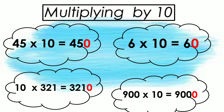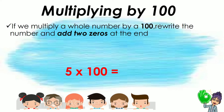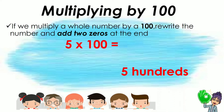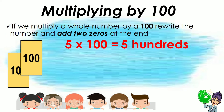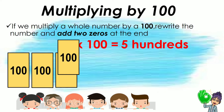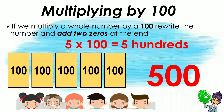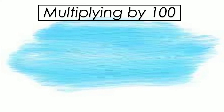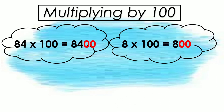Now let's have an example of multiplying numbers by 100. For example, 5 times 100 means we have 5 hundreds, or 5 groups of 100: 100, 200, 300, 400, and 500. So 5 times 100 is equal to 500. In 500, we have 2 zeros. So the shortcut for multiplying by 100 is to write the number and add 2 zeros at the end.